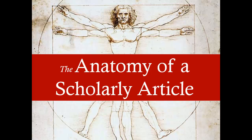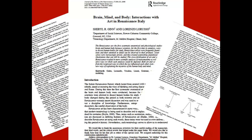This tutorial will describe the anatomy, or different parts, of a scholarly article. By the end of the tutorial, you should be able to quickly determine if an article is scholarly or not. Reading a scholarly article can seem overwhelming at first, as they are often long and contain a lot of data and vocabulary you may not understand. But if you break down the article into parts, it will make things much easier.